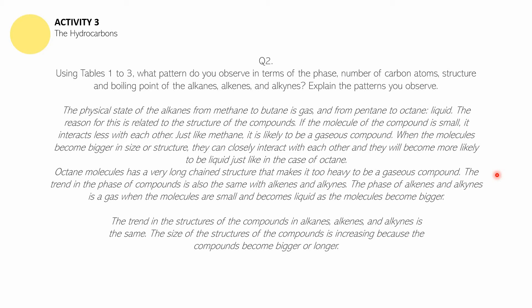Since smaller molecules of hydrocarbons have less interaction between atoms, they are more loose, making them gaseous. When molecules are bigger — say octane with eight carbon atoms — there is a high tendency for these carbon atoms to interact closely, making them stay liquid. Octane molecules have a very long structure that makes them too heavy to become gaseous. This trend in the phase of compounds is also the same with alkenes and alkynes.